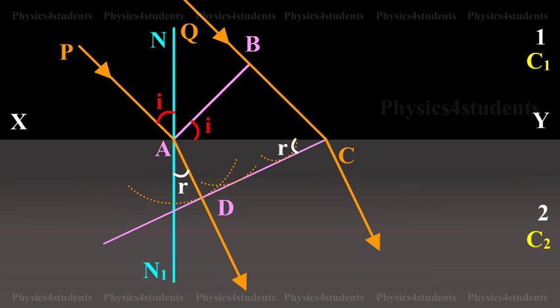Laws of Refraction. The incident wavefront AB, the refracted wavefront CD, and the refracting surface XY all lie in the same plane.